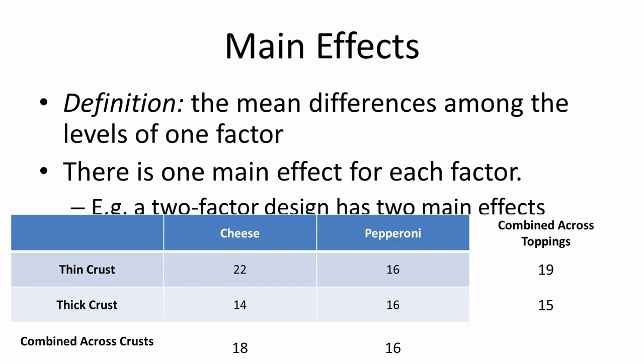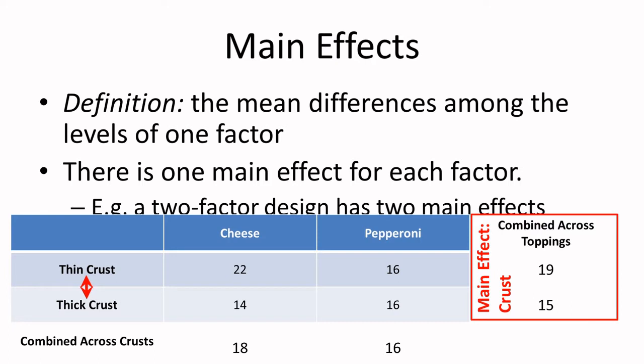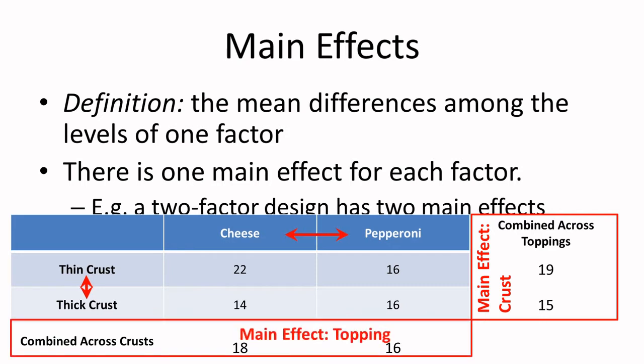The way to determine main effects is to first compare the crusts regardless of the toppings, just averaging across the toppings. Then compare the toppings averaging across the crusts. We're only looking at one factor and completely ignoring the other. When we do this, it does look like we might have a main effect for crust and a main effect for topping. There does seem to be a difference in those averages.